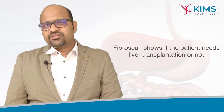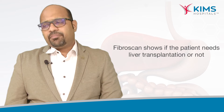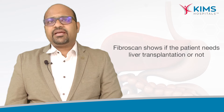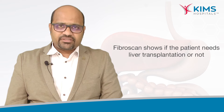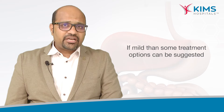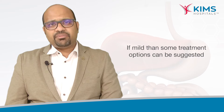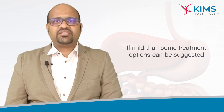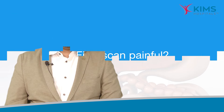Fibroscan essentially tells us how hard the liver has become. If it has become completely bad and cirrhotic — very hard — it can direct us toward a permanent treatment like liver transplantation. Whereas if the damage is very mild, some treatment options can be considered to reverse the hardness.